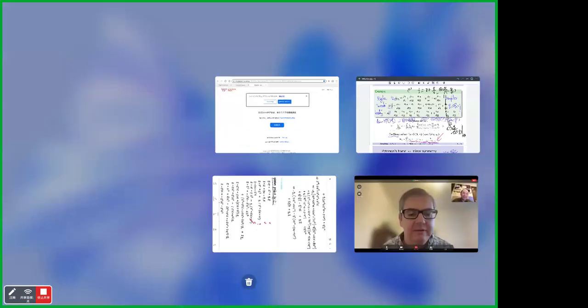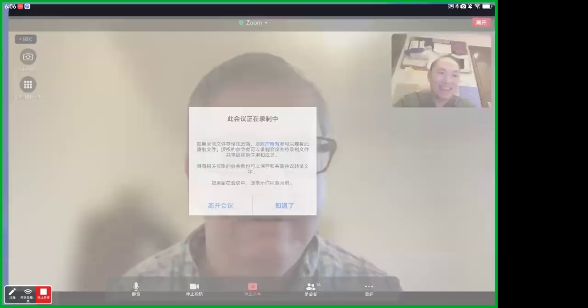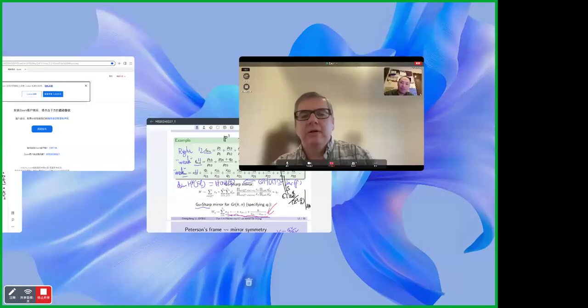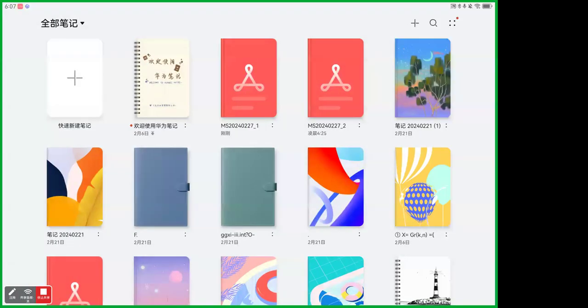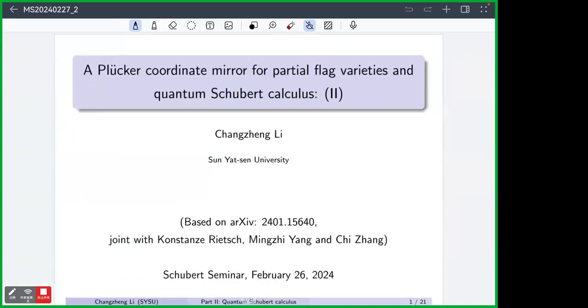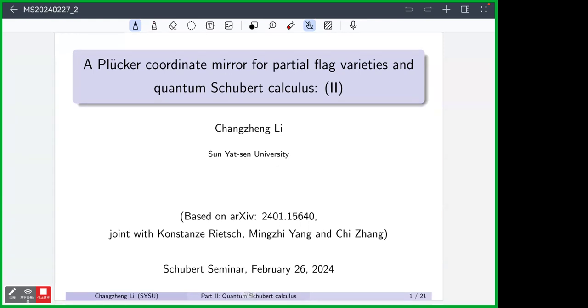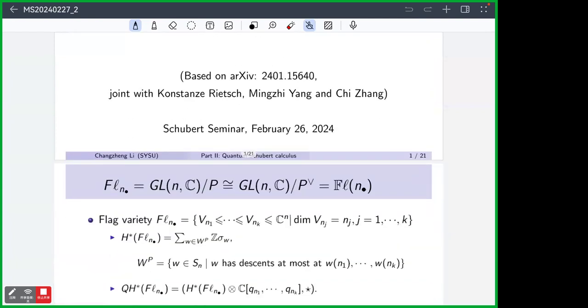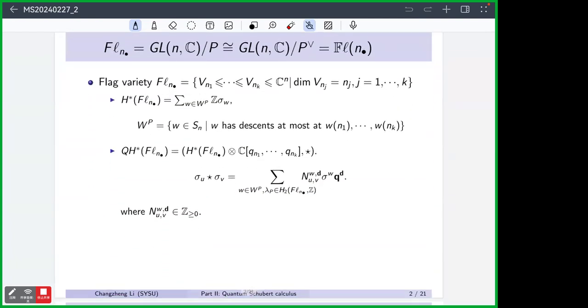All right, so welcome back everyone to the second part of the talk by Chang Zhengli on Plucker coordinates and mirror symmetry. I'm afraid the first part may not be so accessible for the audience, but the second part should be better, I hope. So for the second part, I focus more on quantum supercalculus, and then we just focus on the type A flag variety.